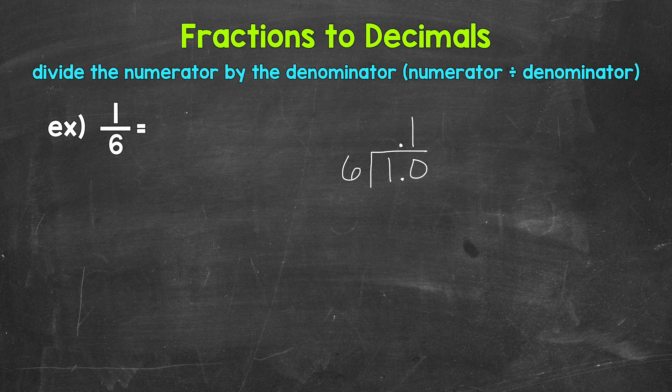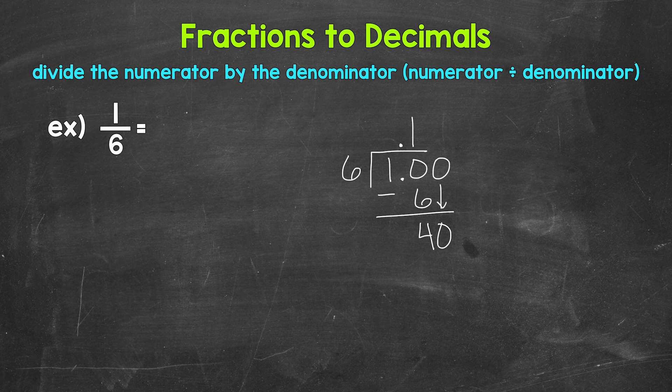Now we multiply. 1 times 6 is 6. Subtract. 10 minus 6 is 4. Now we don't have a clean cut zero there at the bottom, so we need to continue on here by using another zero that we can bring down. So now we have 40.